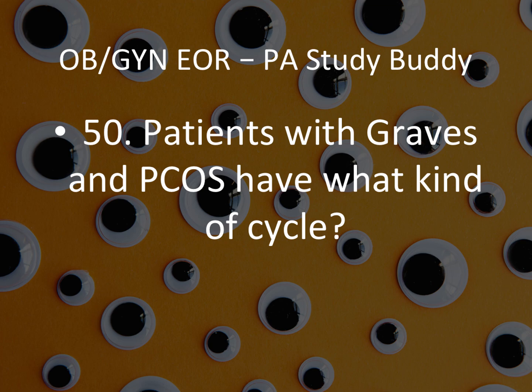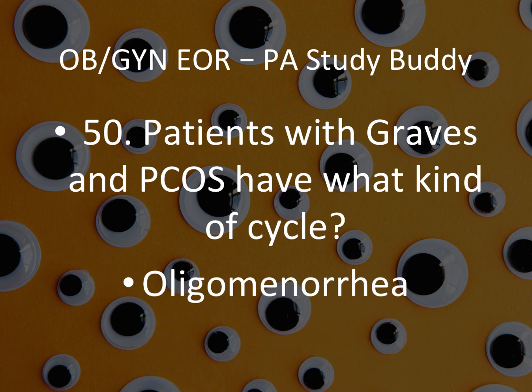Question 49-50: Patients with Graves disease and PCOS — what kind of cycle do they have? They have oligomenorrhea, which is a long cycle. Graves disease presents with eyes bulging; PCOS also causes a long cycle — oligomenorrhea. This completes 50 questions straight from the book.